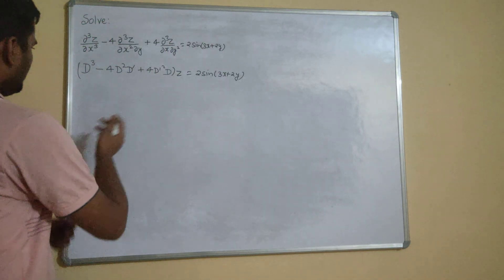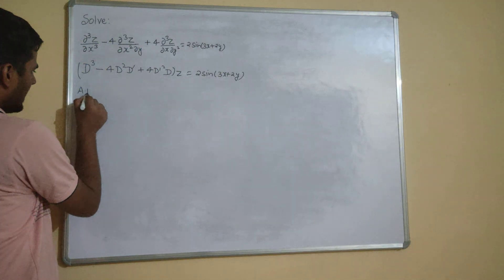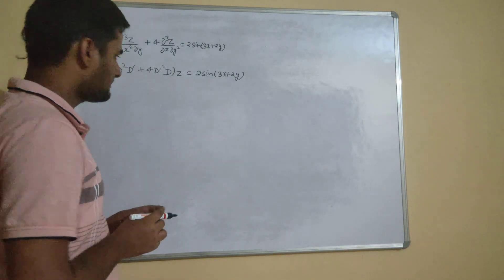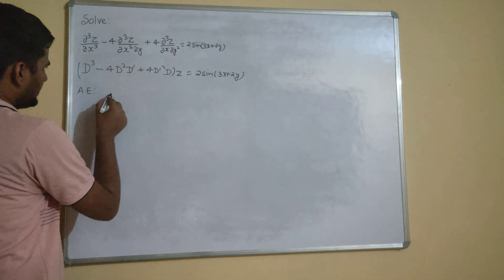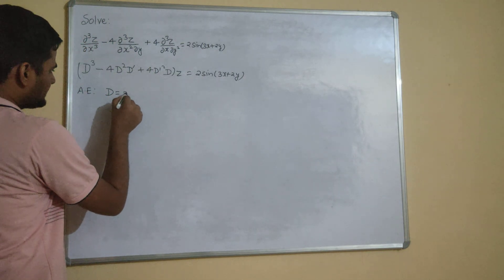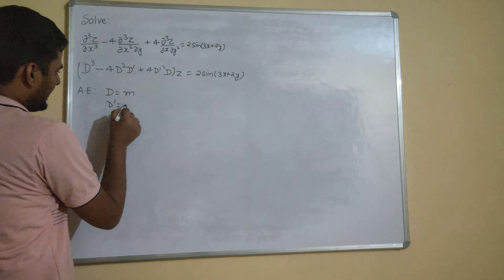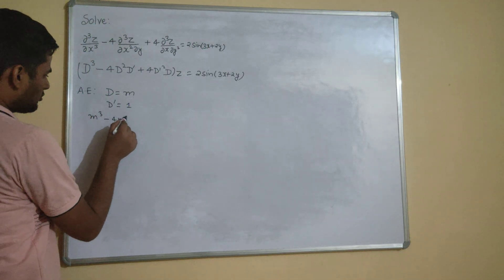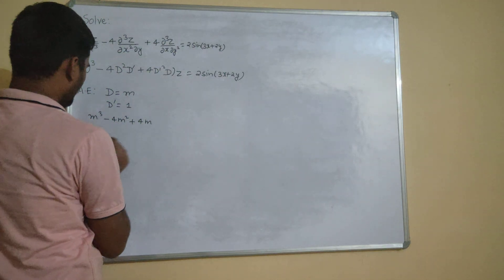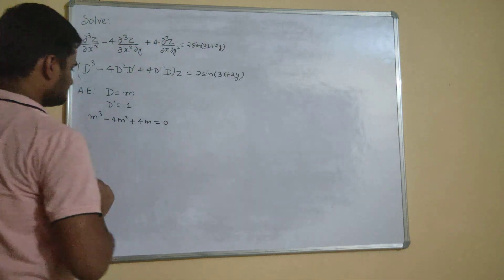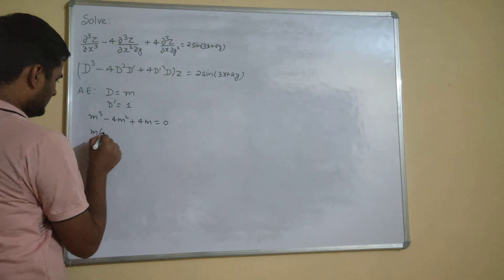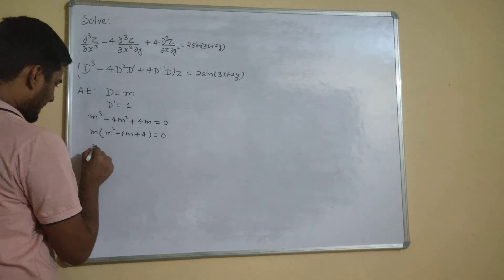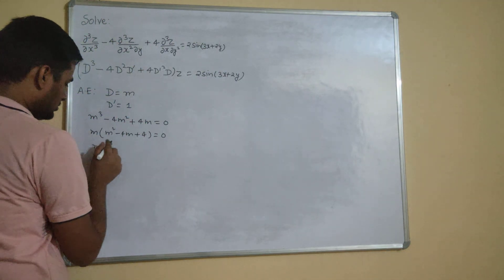The first step towards writing our complementary function will be to find the auxiliary equation, as we used to do in ordinary differential equations. We replace D by M and D dash by 1. If you do so, you will get M³ minus 4M² plus 4M, and equate it to 0. Take M common: M(M² − 4M + 4) = 0, which is M(M − 2)² = 0.